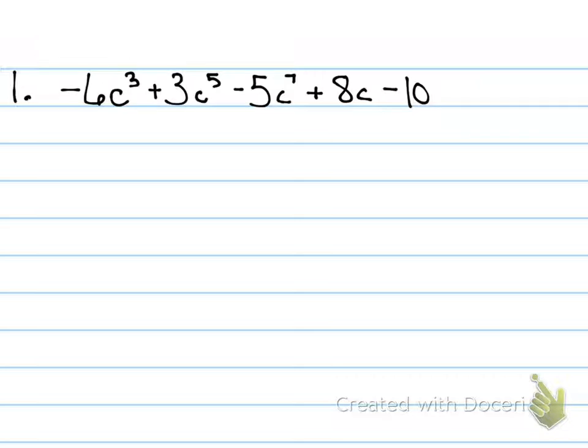We're starting number one by writing the polynomial in standard form. And that means descending order in order of the exponential values. So, here's what you should have written. Did you write it that way?